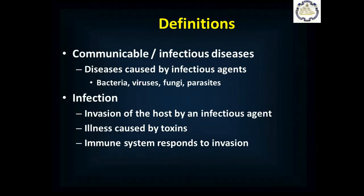A communicable or infectious disease is a disease caused by an infectious agent — generally bacteria, viruses, fungi, or parasites. These cover the majority of cases you'll see. Infection is invasion of the host by an infectious agent, usually resulting in illness. Not always — some people who are infected aren't ill — but for the most part you become ill because the infectious agent is releasing toxins and damaging your body, and your immune system responds to the invasion. A lot of the symptoms you get come from that immune response.